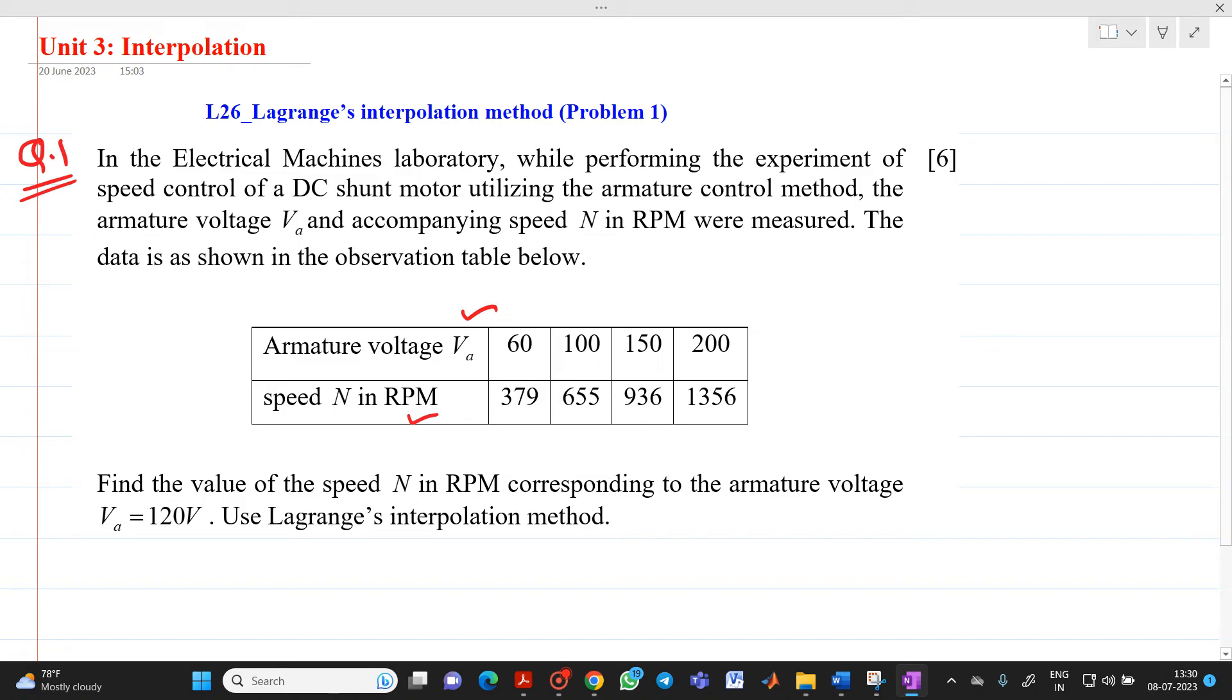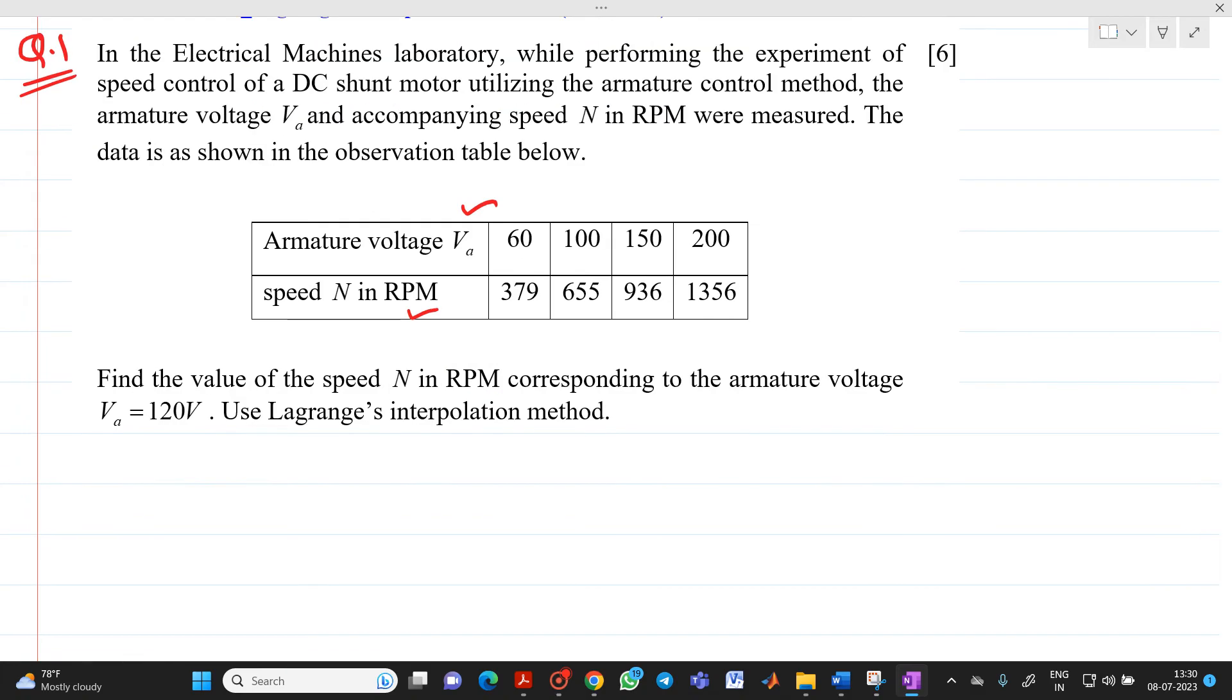So, the question is, we have to find the speed when VA equal to 120. So, let me consider this as X0, X1, X2, X3. This will be Y0, Y1, Y2, and Y3. And we have to find out what is the speed when voltage VA will be equal to 120 volt.